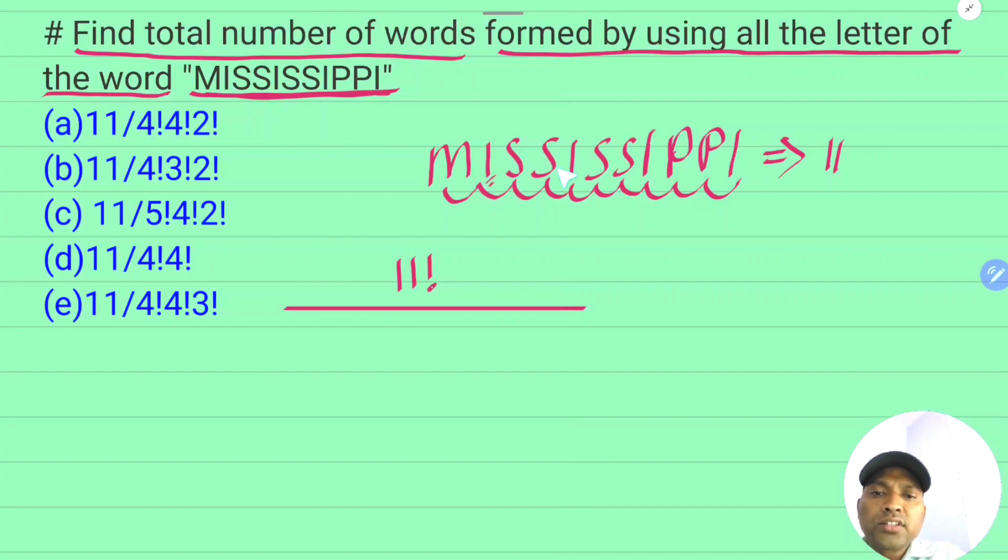First, I repeats four times. S repeats how many times? Four times. So for alike objects arrangement, we divide by that part. S appears four times, so divide by 4 factorial.